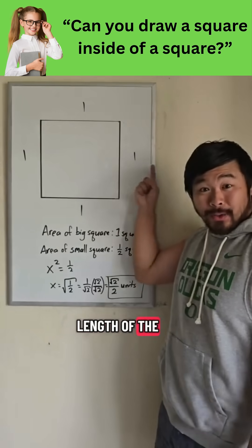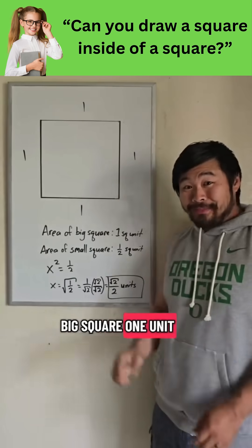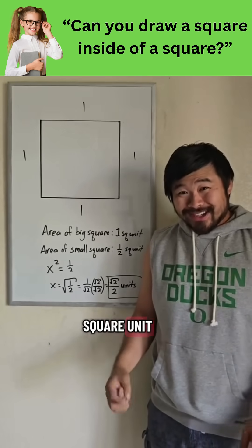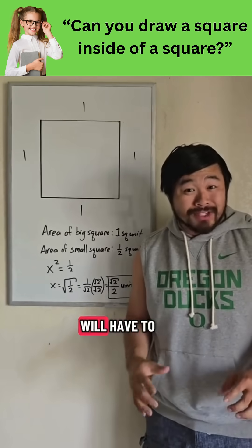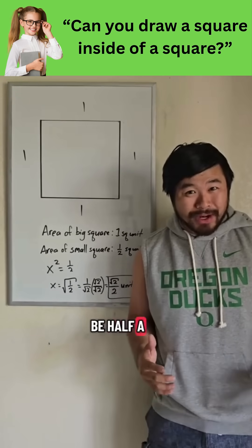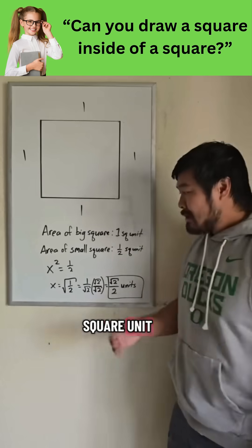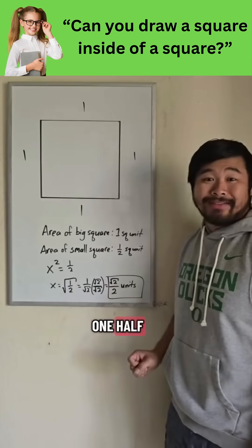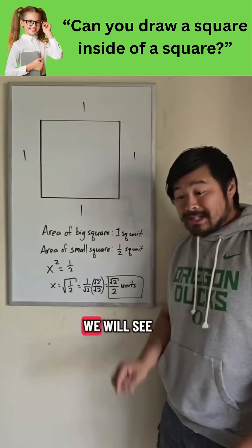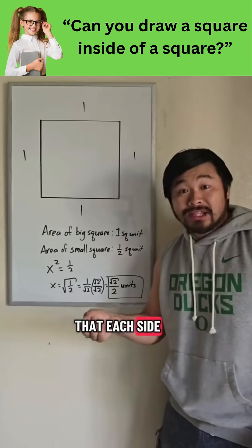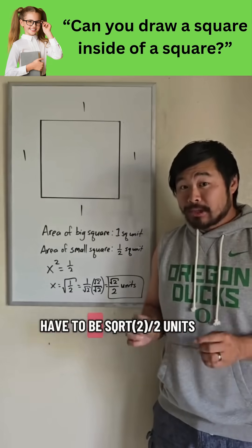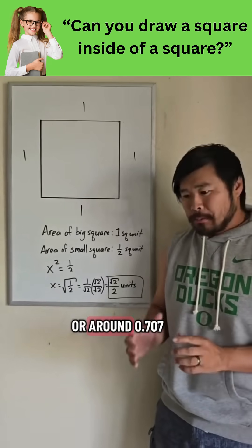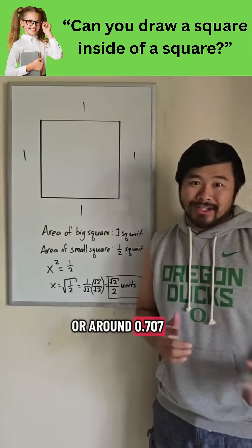If we call each side length of the big square one unit, then the area of the big square is one square unit. So that means the area of the smaller square will have to be half a square unit. So we need some number times itself to equal one-half. Doing the math, we will see that each side length of the small square will have to be square root of 2 over 2 units, or around 0.707 units.